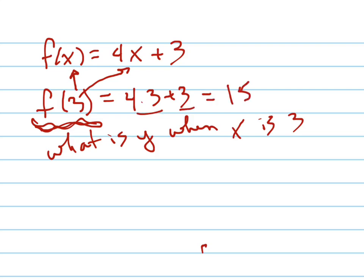So what is F of 3? 15. That's another way of saying the point 3 comma 15 is a point on your graph.